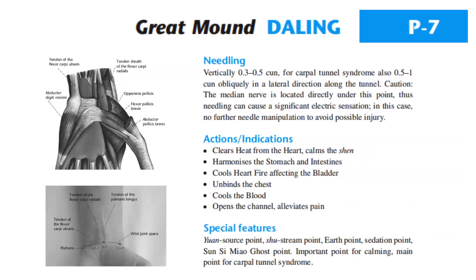Needling of Pericardium 7: vertically 0.3 to 0.5 cun; for carpal tunnel syndrome, also 0.5 to 1 cun obliquely in a lateral direction along the tunnel. Caution: the median nerve is located directly under this point; thus needling can cause a significant electric sensation. In this case, no further needle manipulation to avoid possible injury.